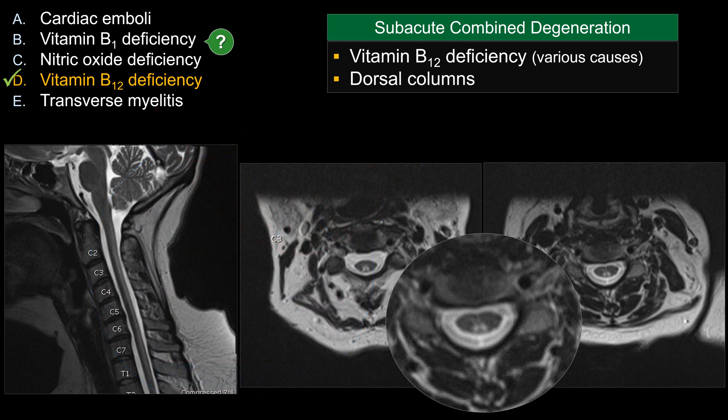Choice B is vitamin B1 deficiency, or thiamine deficiency — referred to as Wernicke's encephalopathy. Wernicke's encephalopathy has a classic appearance of symmetric involvement of bilateral mammillary bodies, periaqueductal gray, bilateral hypothalamus, and areas adjacent to the third ventricle, with FLAIR signal abnormality and sometimes restricted diffusion. That would be vitamin B1 deficiency, not what we see here.